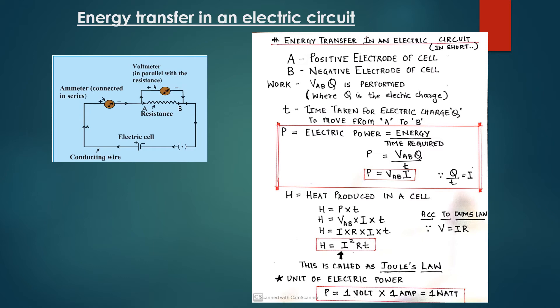P is equal to the electric power. What is electric power? Electric power is a ratio of energy to the time required. P is equal to VABQ upon T. Here, Q upon T is equal to I, the electric current. Therefore, P is equal to VABI.